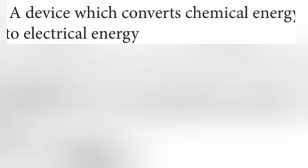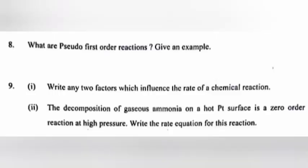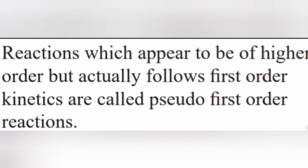Question 7 Part 2: Write the cell representation of the Daniel cell — answer: Zn | Zn²⁺ || Cu²⁺ | Cu. Question 8: What are pseudo first order reactions? Give an example. Answer: Reactions which appear to be higher order but actually follow first order kinetics are called pseudo first order reactions.